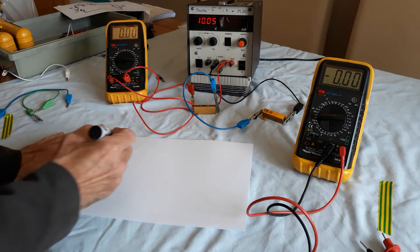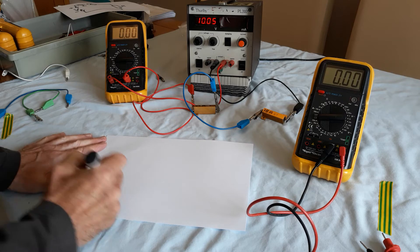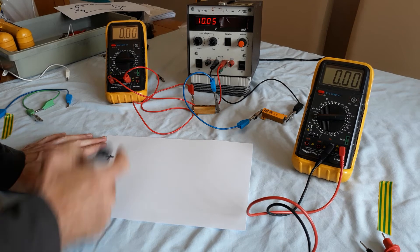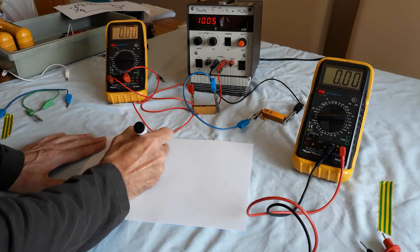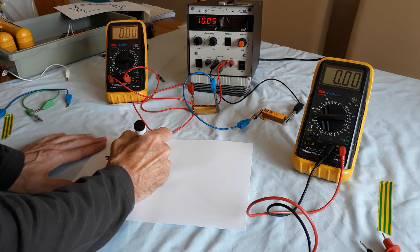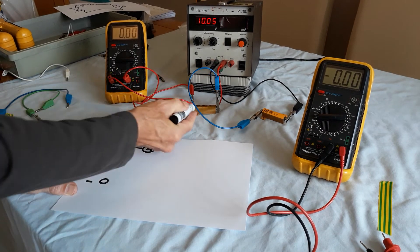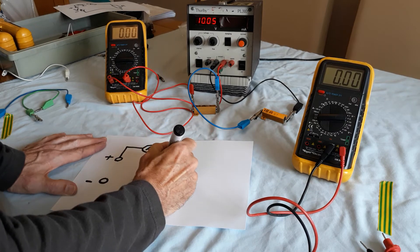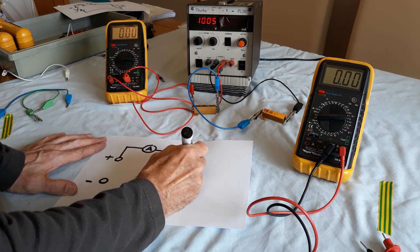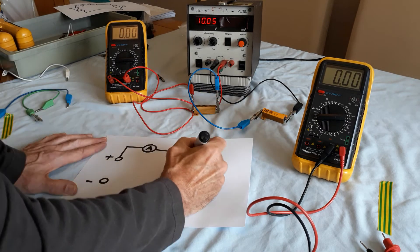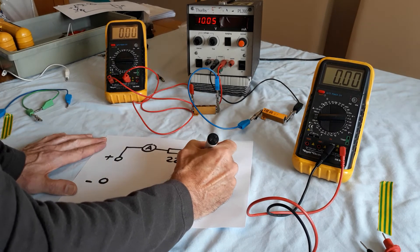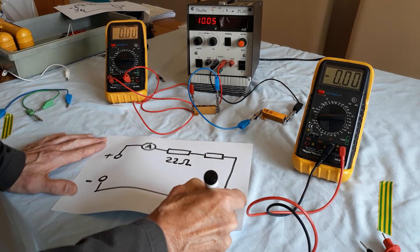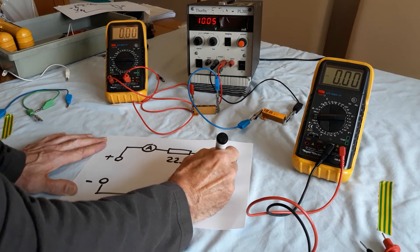Okay, so there's our supply terminals, one positive, one negative. The first thing we did, we went to an ammeter. Out of the ammeter went to the first resistor, which was 22 ohms. Out of that went to the next resistor, and from there went back to the negative of the supply, and that was 18 ohms.